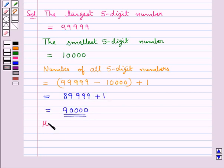Hence we say there are in all 90,000 of 5-digit numbers.